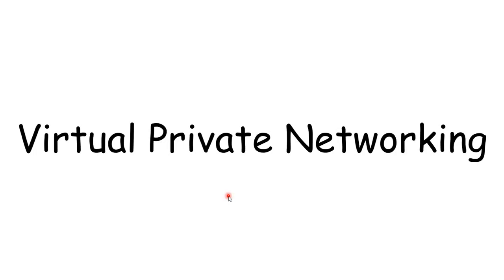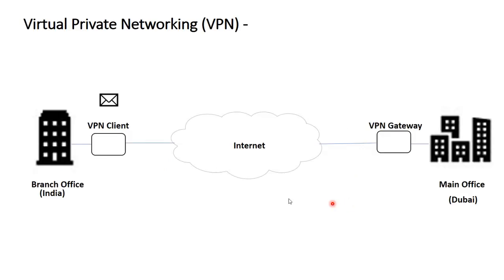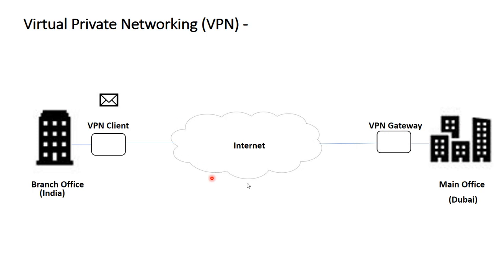In this video we are going to discuss in detail about virtual private networking. A virtual private network, or VPN, is an encrypted connection over the internet from your remote network to your main office network. VPN allows a computer or a whole network to connect to each other over the internet securely.